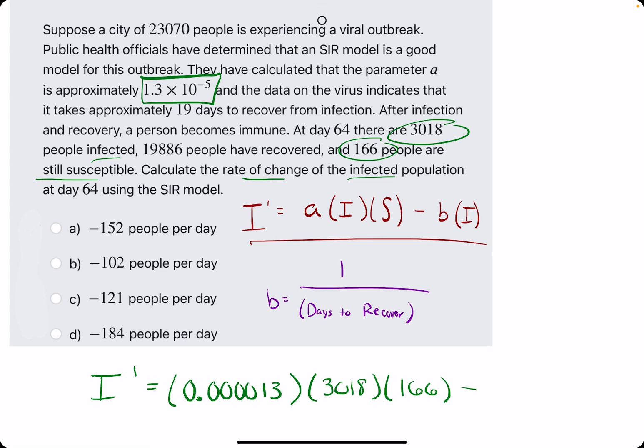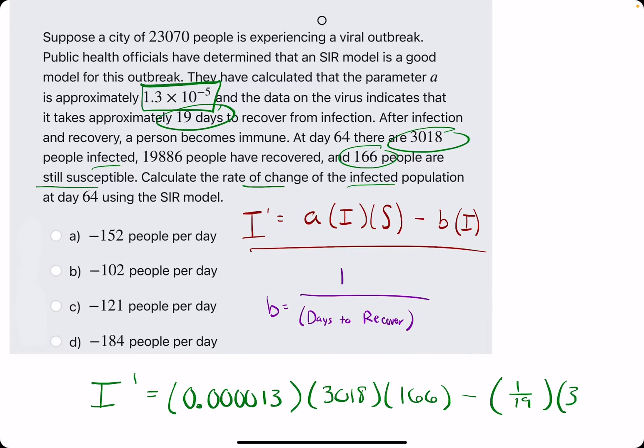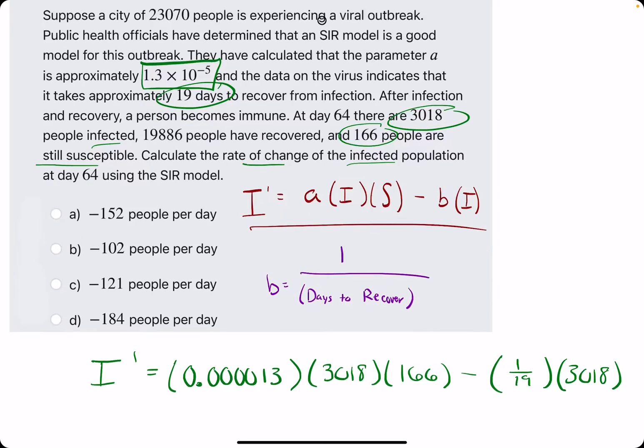Minus B, which is 1 over the days it takes to recover, which is 19. 1 over 19, and then again we need I, which is the 3,018 value.